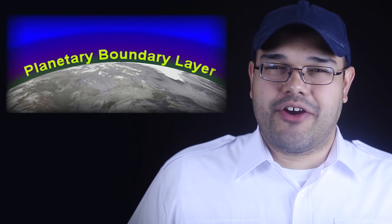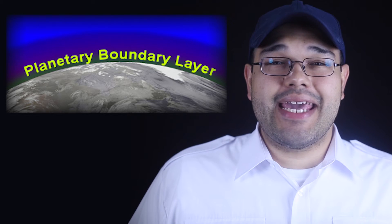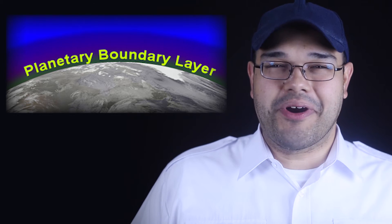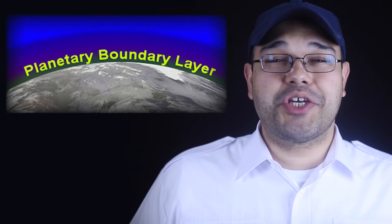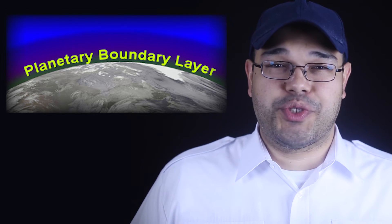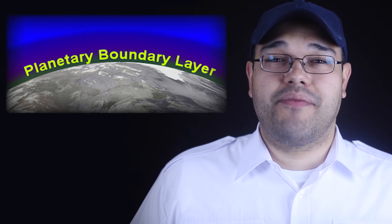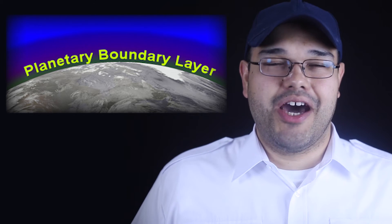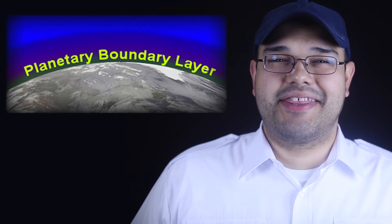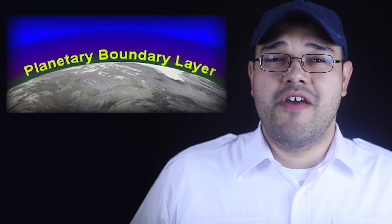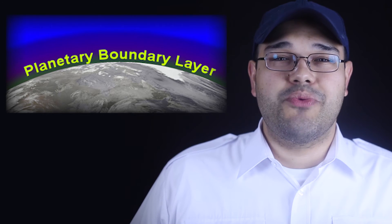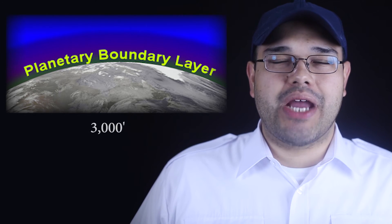Within the troposphere is the planetary boundary layer. The planetary boundary layer is the lowest layer of the troposphere, and is important because the friction between the atmosphere and the Earth's surface influences the behavior of the wind and the generation of turbulence. The thickness of the planetary boundary layer varies widely with conditions, but averages around 3,000 feet.